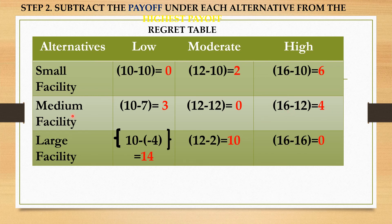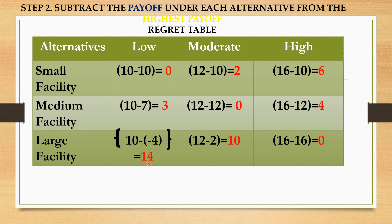If you constructed a medium size facility and demand becomes high, you have 12 million pesos income — but that is not the highest amount; 16 million is. So you have a regret of 4 million pesos. The largest regret is under 'Low' for large size facility: 14 million pesos. This is because you incur a loss of 4 million, and on top of that, you miss out on earning 10 million — giving a total regret of 14 million pesos.